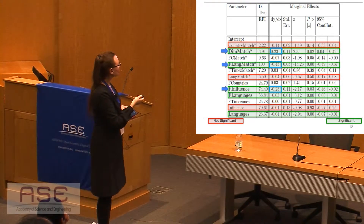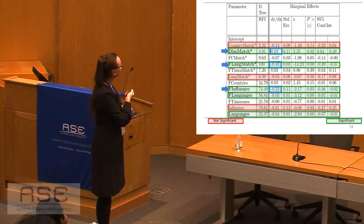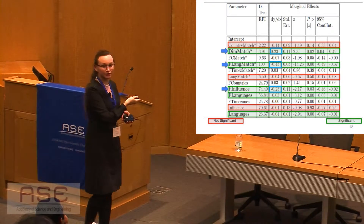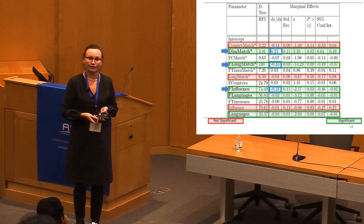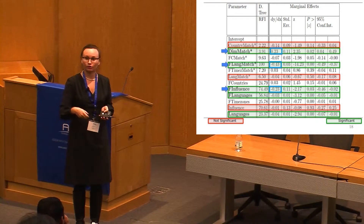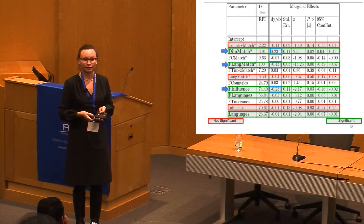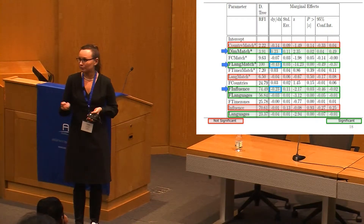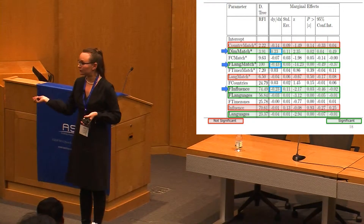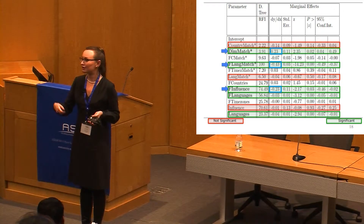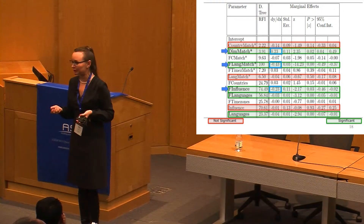Another interesting feature is influence. User influence was not as significant as followers' influence. When followers' influence was growing, the response rate from friends on Twitter was actually decreasing. So the more influence of the followers, the less the probability of getting replies from them.